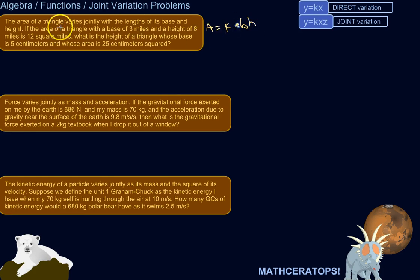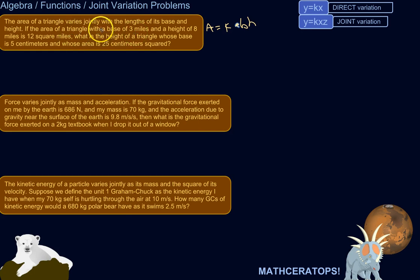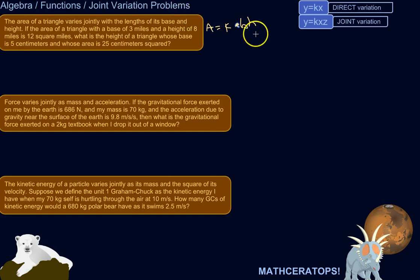If the area of a triangle with a base of three miles and a height of eight miles is 12 square miles, what is the height of a triangle whose base is five centimeters and whose area is 25 centimeters squared? I'm doing this pretty simple example — by this point I think you've covered calculating the area of a triangle — but just to show you that that's an example of joint variation.